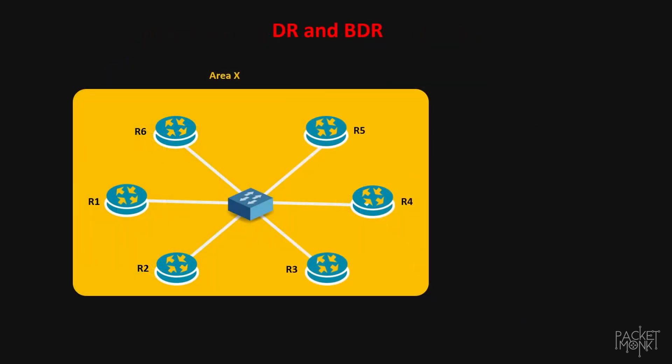Next one is DR and BDR. If there were no DR and BDR roles in a multi-access OSPF network — multi-access means multiple routers connected to the same L2 domain, as you see in this diagram — all routers would have to exchange their updates with all other members, which would increase the control plane traffic. In this example there are 6 routers connecting to the same L2 switch, and if each router shared their full information with each other, this can introduce a lot of control plane traffic.